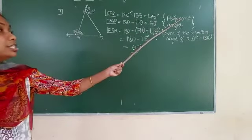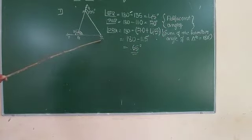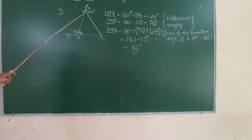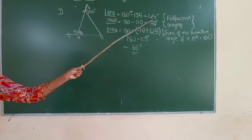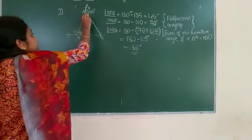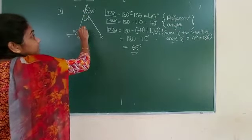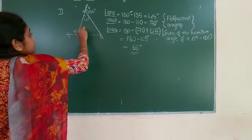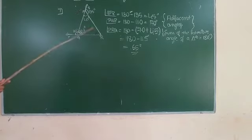In the same way we can find angle QPR. Here we subtract 135 degrees from 180 degrees, and we get 45 degrees. So angle QPR is 45 degrees, and angle PQR is 70 degrees.